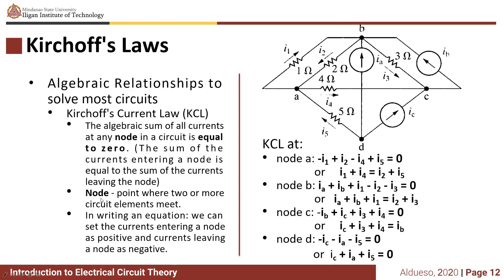What is a node? A node is a point where two or more circuit elements meet. In writing an equation, we can set the currents entering a node as positive and currents leaving a node as negative.